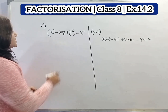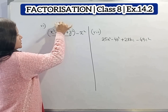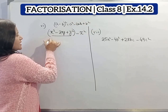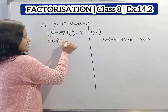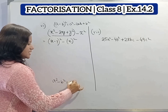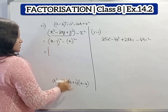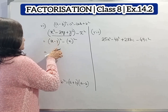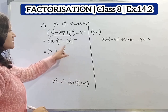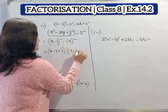Now question number 7: x square minus 2xy plus y square minus z square. Now x square minus 2xy plus y square is the formula of a minus b whole square, since a minus b whole square equals a square minus 2ab plus b square. So we can write x minus y whole square minus z square. Now applying a square minus b square where a equals x minus y and b equals z, we get x minus y plus z into x minus y minus z.